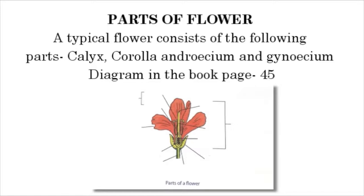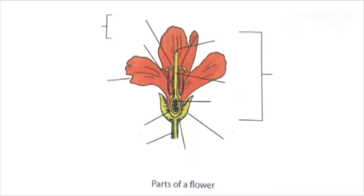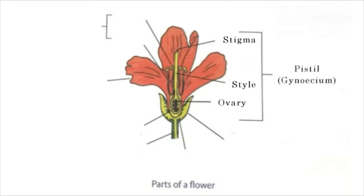Children, please open your book to page number 45. Here is the diagram. Stigma, Style, Ovary — these three are called the Pistil, or Gynoecium.